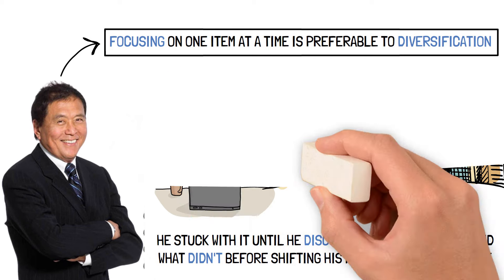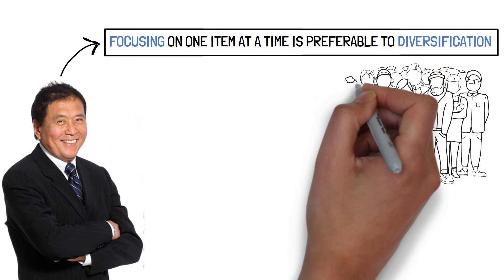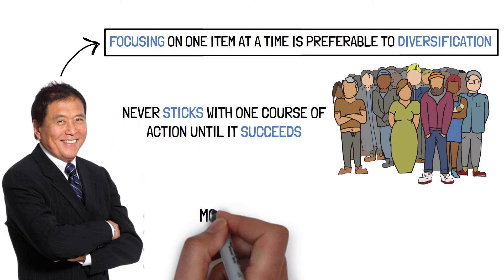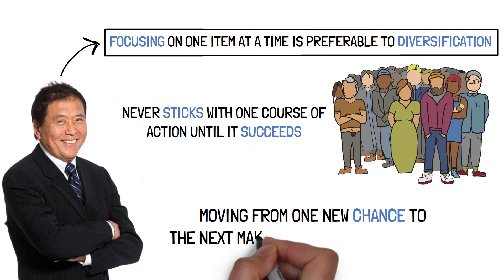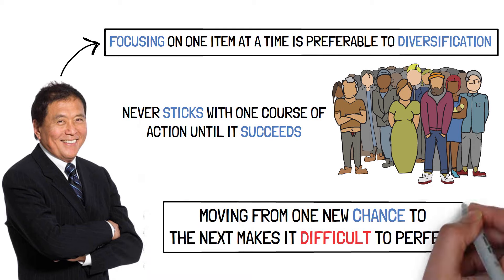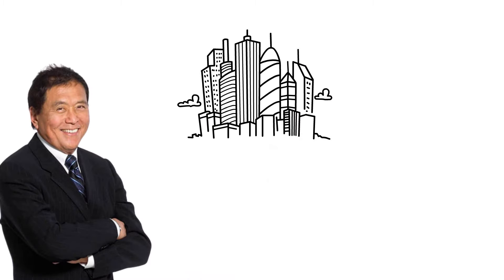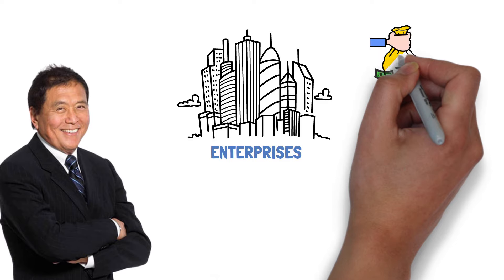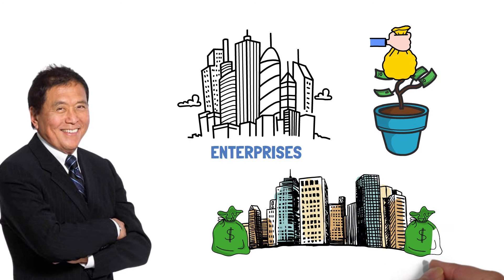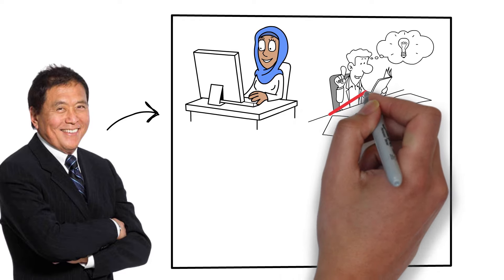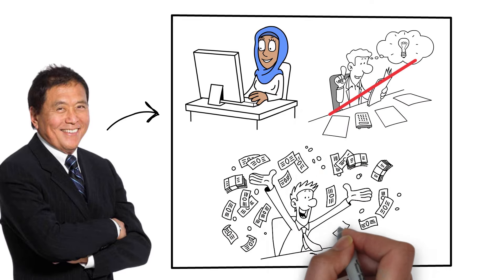Society frequently succumbs to shiny object syndrome and never sticks with one course of action until it succeeds. Moving from one new chance to the next makes it difficult to perfect. He expanded into enterprises and other sorts of investing after becoming wealthy in real estate. Following through on one item rather than hopping to new ideas every few months can sometimes be the key to success.